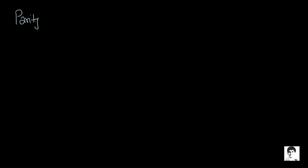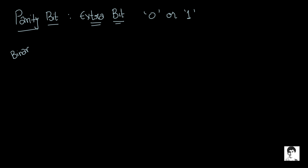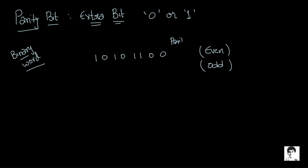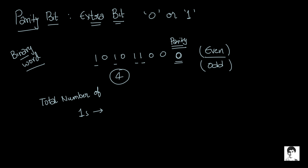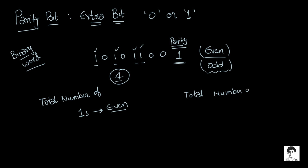A parity bit is basically an extra bit that is set at the transmission side to either 0 or 1. Let's say I am transmitting the binary word 1 0 1 0 1 1 0 0. What would my parity bit be when using even parity, and when using odd parity? It all boils down to the number of ones in the binary word — here we have four. When using even parity, the parity bit would be 0, because the total number of ones must be even. When using odd parity, the number of ones has to be odd, so the parity bit would be 1, making the total five ones, which is odd.